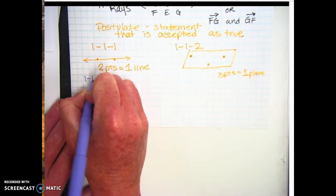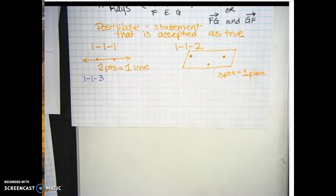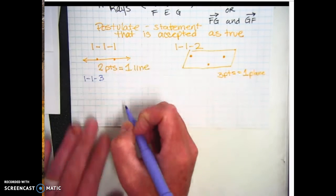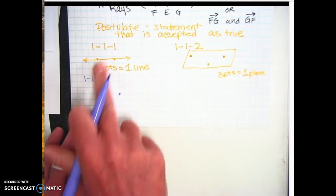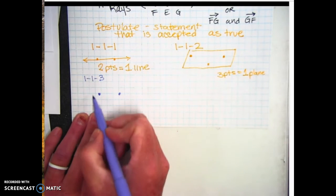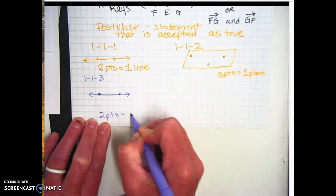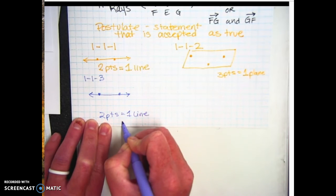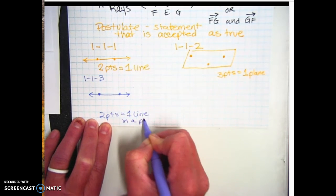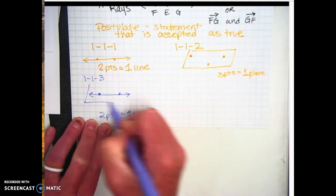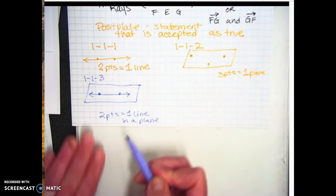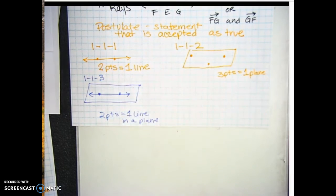Alright? The next one is 1-1-3. And it says, if two points lie in a plane, then the line containing those points lies in the plane. So we're going to go with two points again, just like we did right here. We had two points, which made one line. So two points is going to equal one line. But this time, we're going to put it in a plane. So we're going to draw the parallelogram around it, which is basically your slanted rectangle. And that's the third postulate.